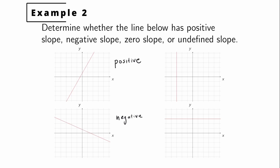For the vertical line, the x coordinate cannot change direction. The denominator is the change in the x coordinate; since there's no change in the x coordinate, we'd be dividing by zero. So a vertical line has undefined slope. And finally, for the horizontal line, as the x coordinate changes, the y coordinate does not change. The numerator — the change in y — is zero. So the slope is zero divided by the change in x, giving slope zero.